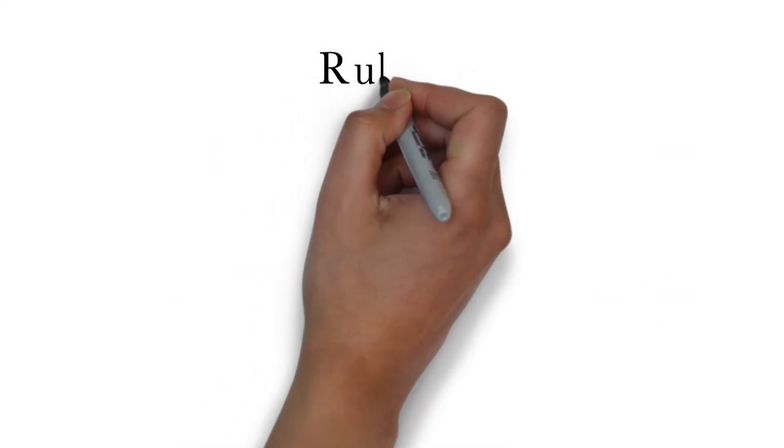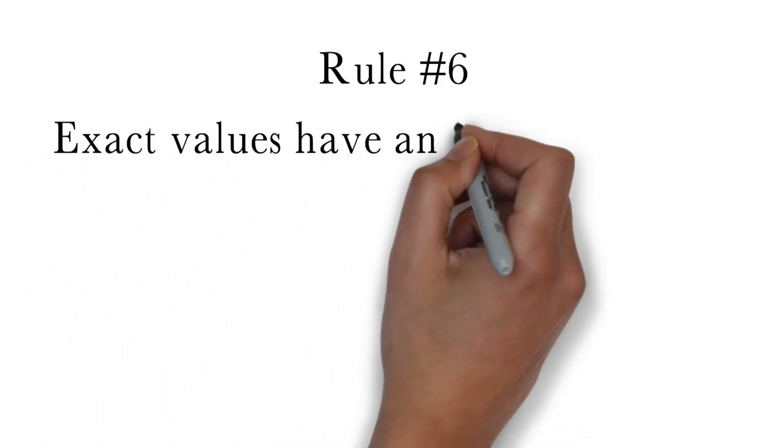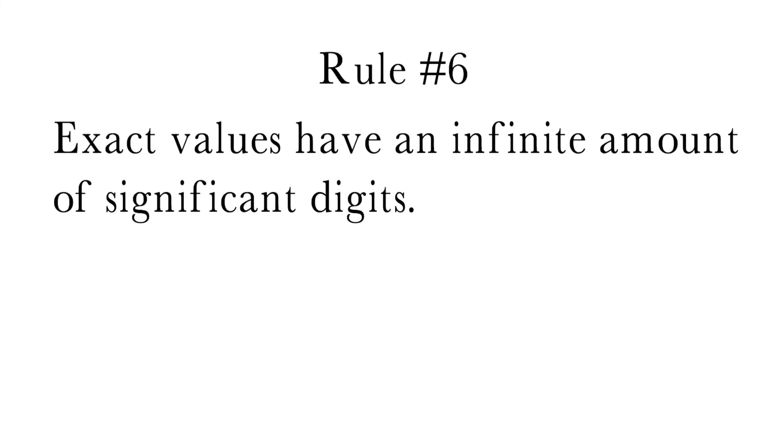Finally, the sixth rule of significant digits is exact values have an infinite number of significant digits. This rule sounds strange, but consider that significant digits are used to communicate the certainty of a measurement. The more significant digits there are, the more certain the measurement.